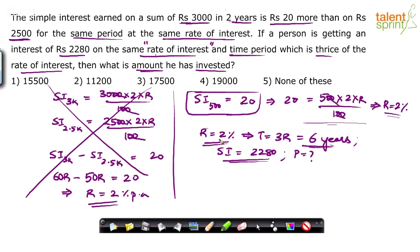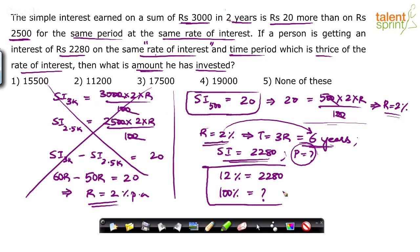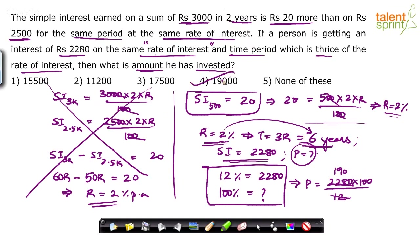Each year you get 2% interest, so in 6 years you get 12% of the principal. This 12% equals the actual interest of 2280. Since the principal is always 100%, cross-multiplying gives: principal = 2280 × 100 / 12. Breaking it down: 2280/12 — treat 2280 as 2400 minus 120, giving 200 minus 10 equals 190. So the principal is 190 × 100 = 19,000 rupees. Option 4 is the answer.